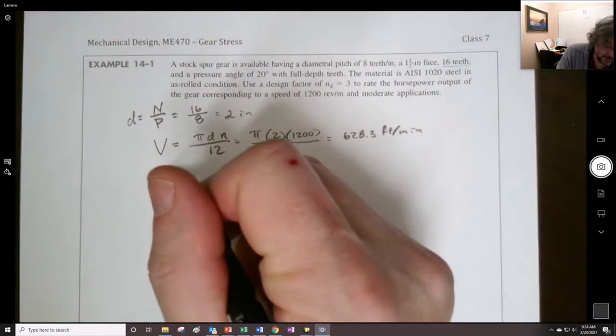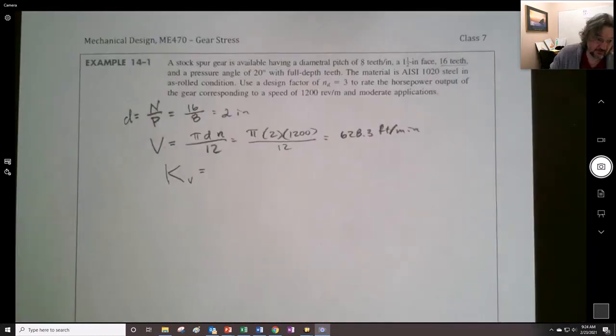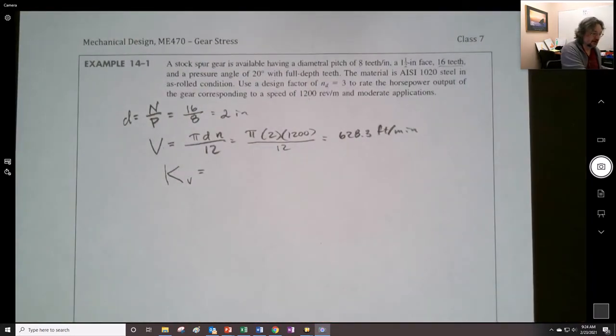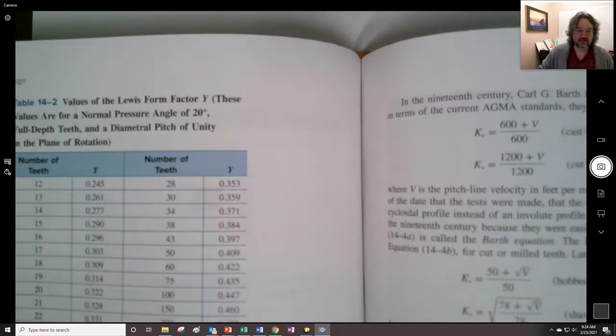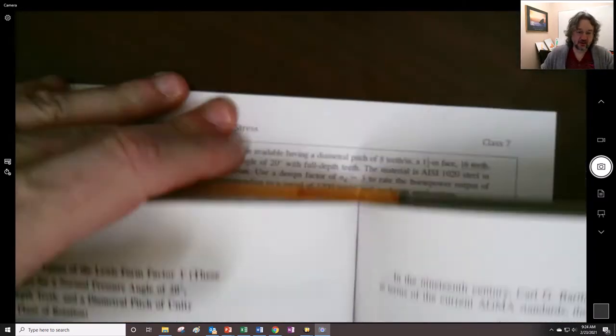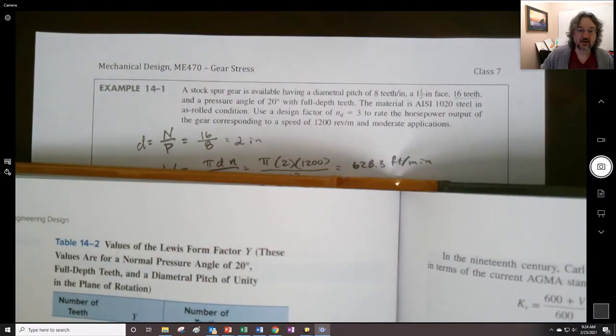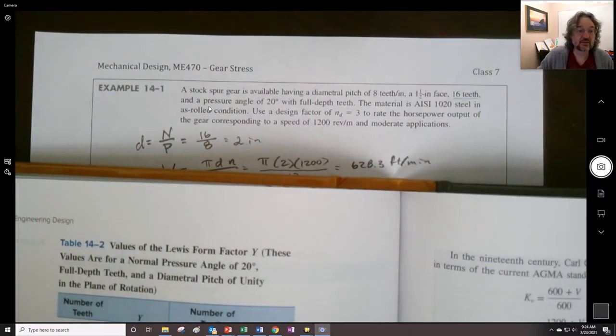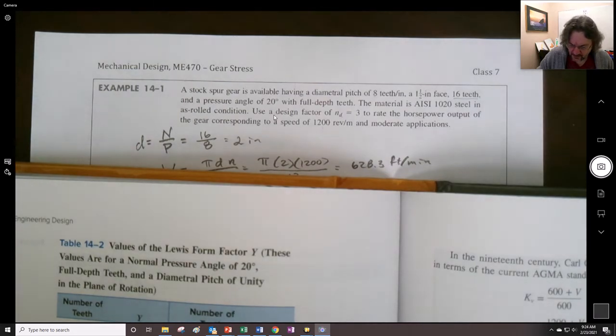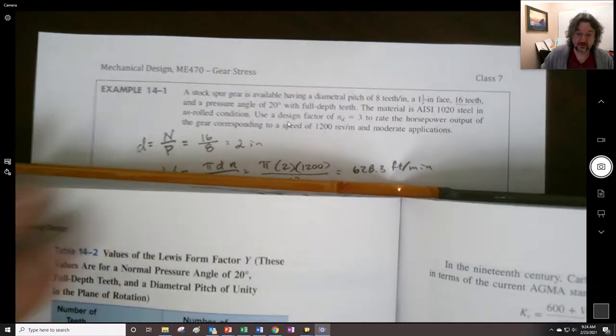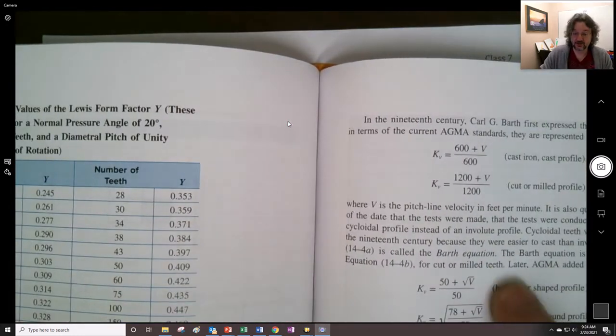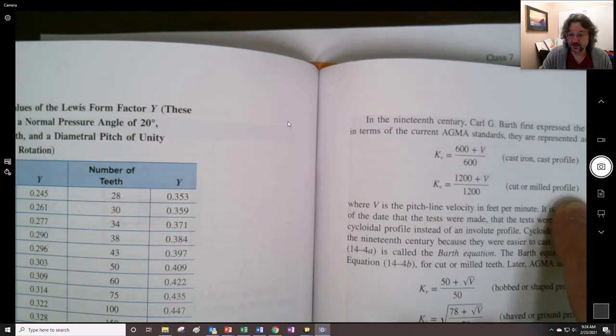From this V, we can find KV. So we have to figure out which KV to use. They gave us sort of a hint in the problem by way of saying that it was a stock spur gear. They didn't really, when they're talking about here, let's see, did they actually say how it was cut? They didn't. So I think we have to make an assumption here when looking through there. What they decided to do in this section was to use the cut or milled profile.